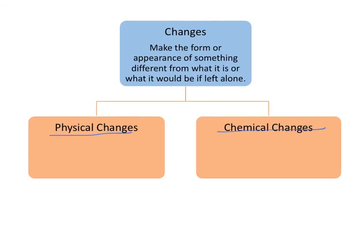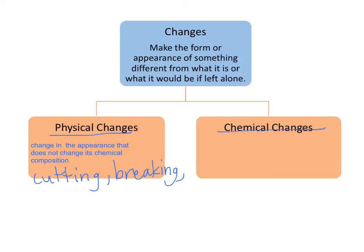Let's start with the physical. Physical changes are a change in the appearance of a substance that does not change its chemical composition. So that could be like cutting or breaking. Or earlier we said boiling point was a physical property because boiling something is a physical change.